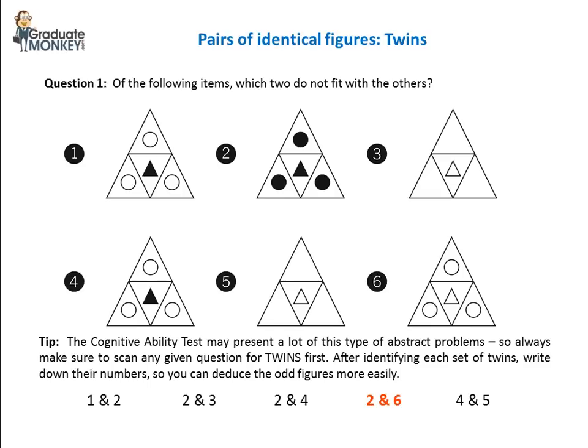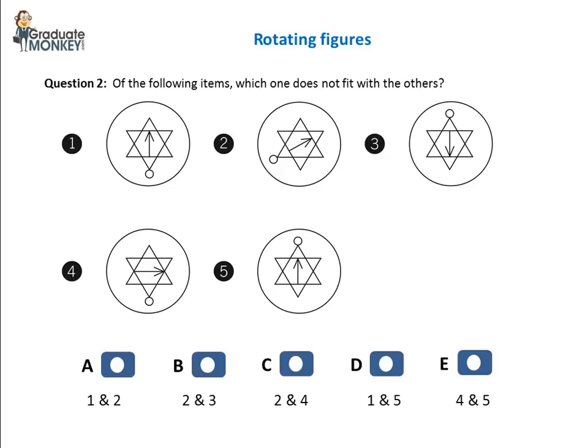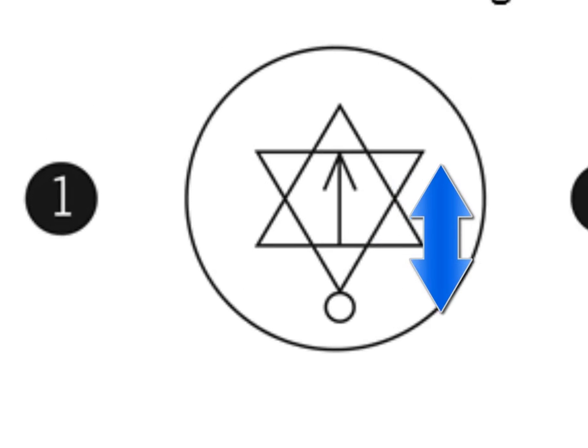Now let's see the next type of problems involving rotating figures. Figures may rotate clockwise or counter-clockwise. The following question features star shapes that contain an arrow and a circle each. The arrow points away from the circle.